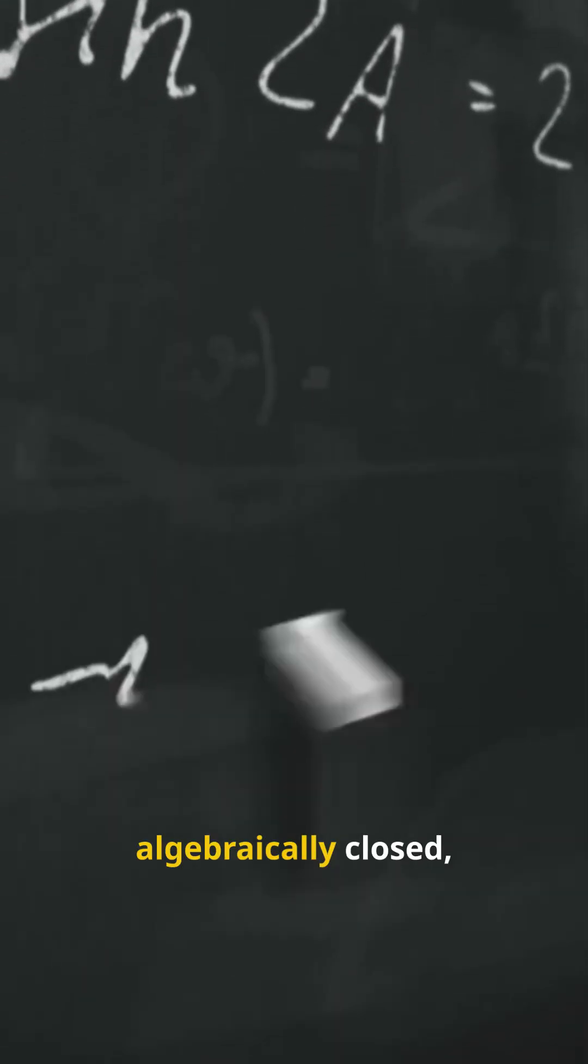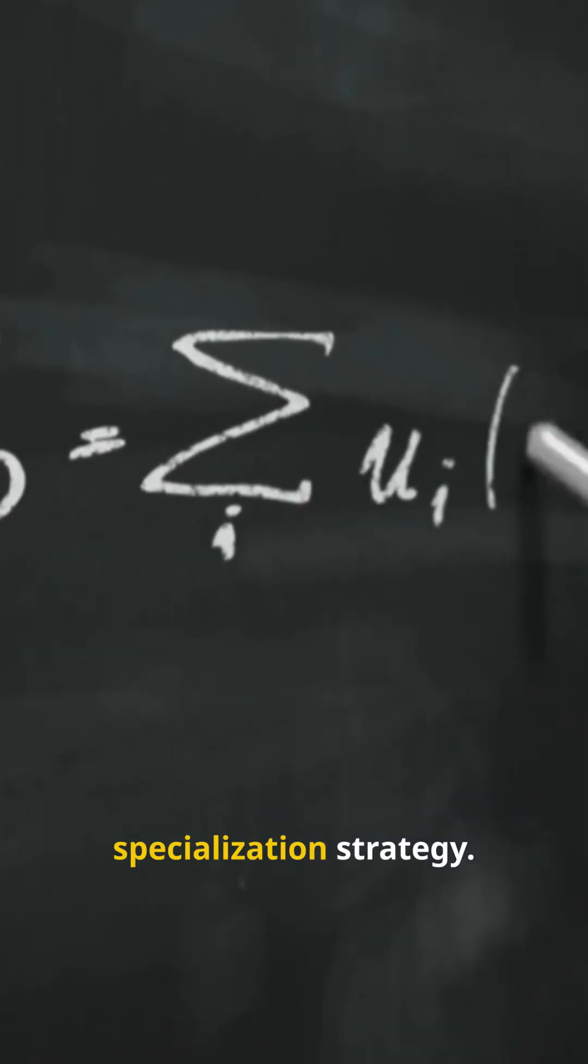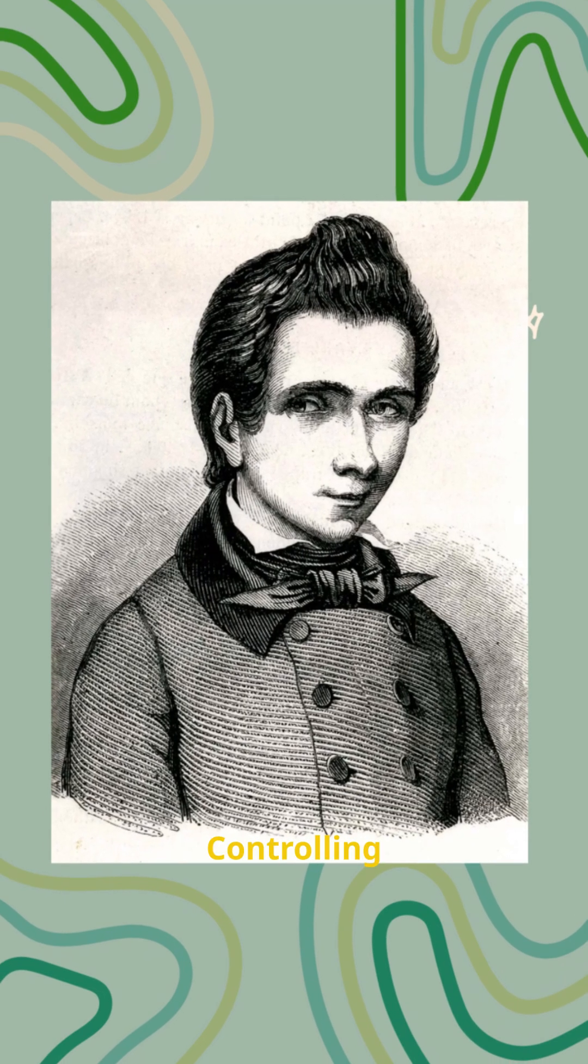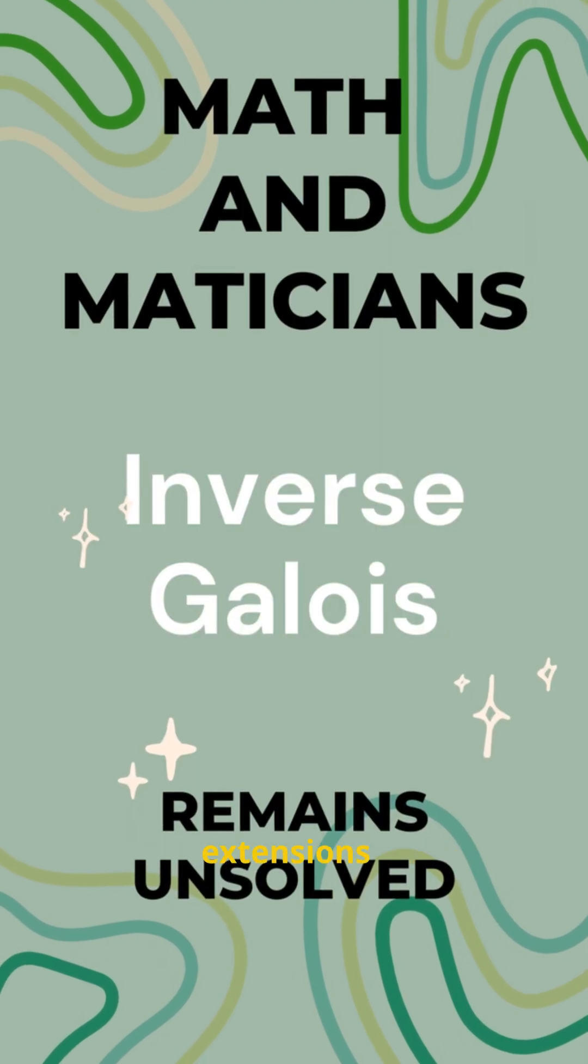Over K(T) with K algebraically closed, every finite group is realizable, giving a specialization strategy. The hardest parts of the problem: Controlling ramification at primes and constructing minimal ramification extensions.